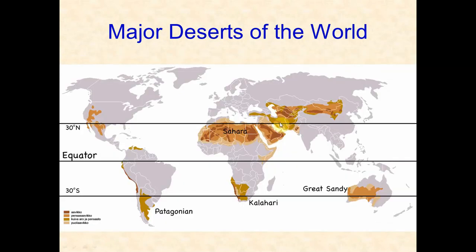The world's largest desert is the Sahara, which falls right at 30 degrees north latitude. The Middle East also forms a sizable desert at 30 degrees north — both are products of Hadley cells. The Great Sandy or Great Victorian Desert in Western Australia falls along 30 degrees south latitude, also created by Hadley cells. The Gobi Desert, the Mojave Desert, and even the Patagonian Desert in South America are all rain shadow deserts — each has a coastline, a mountain range, and a desert on the other side.